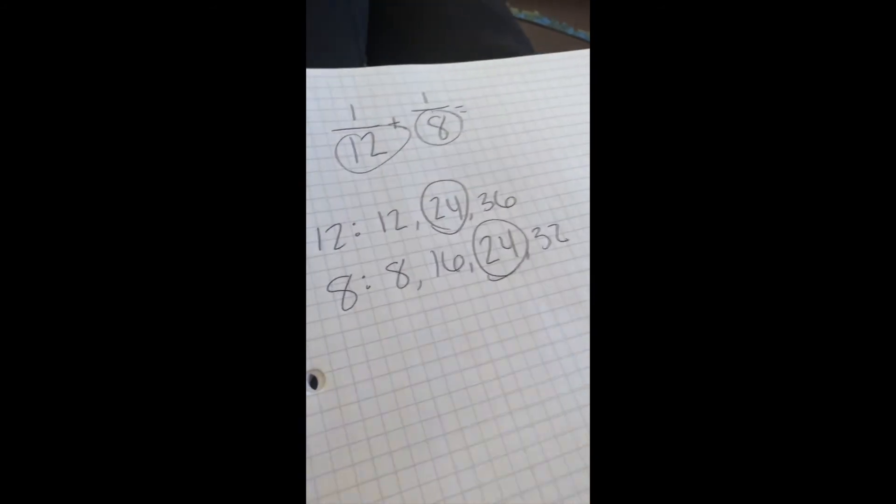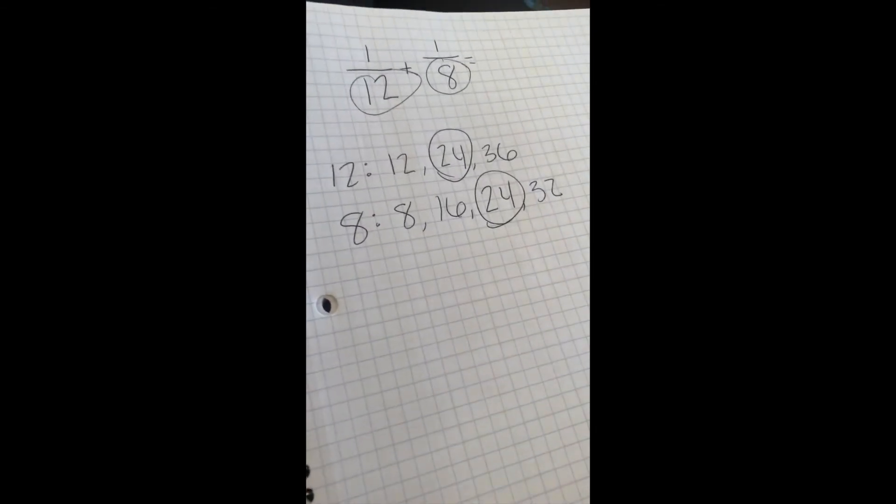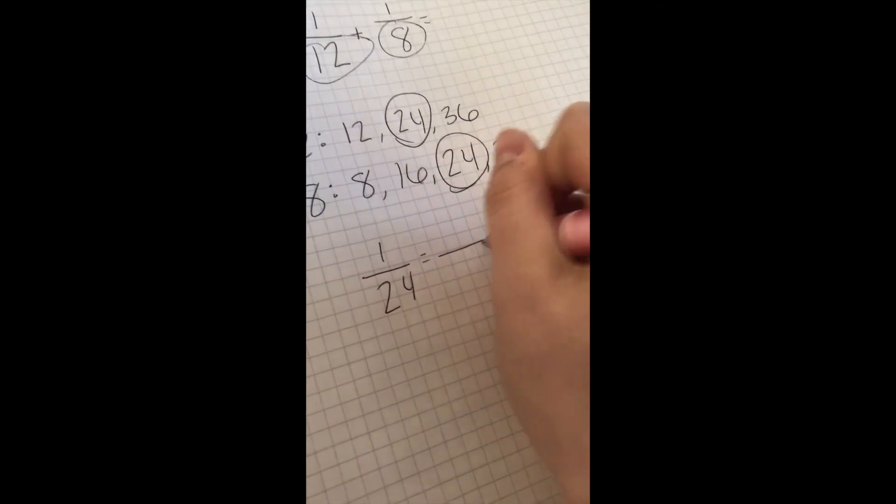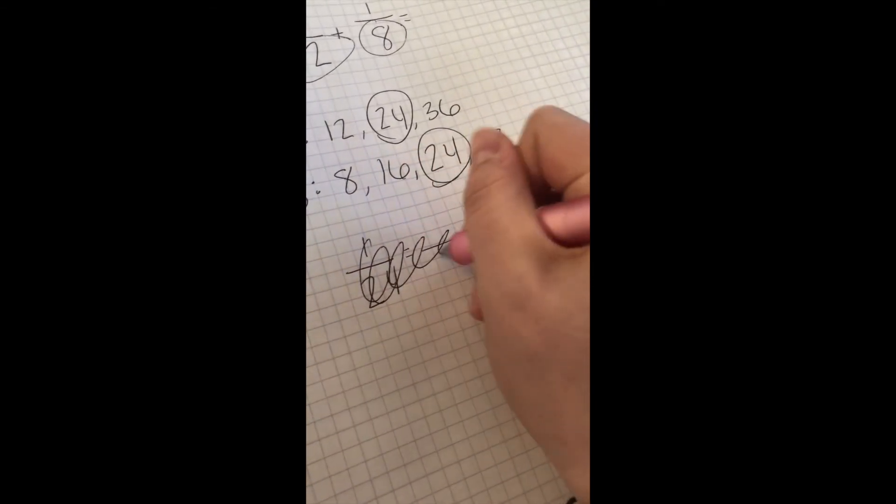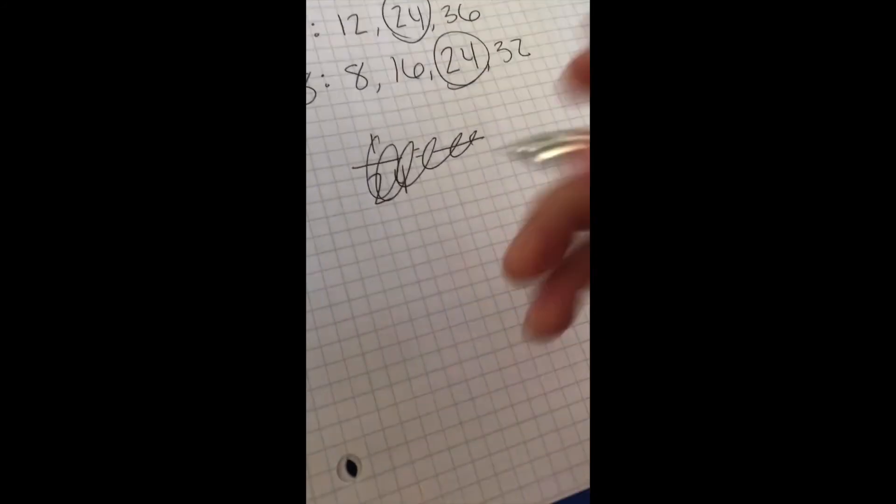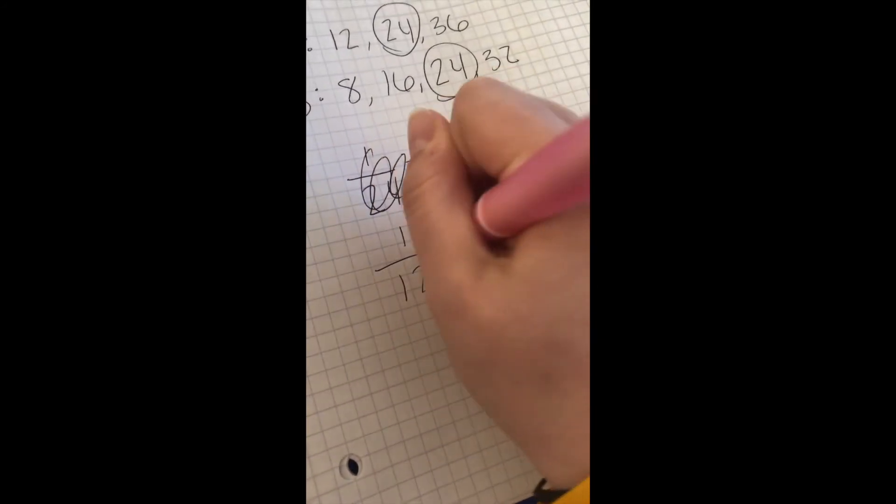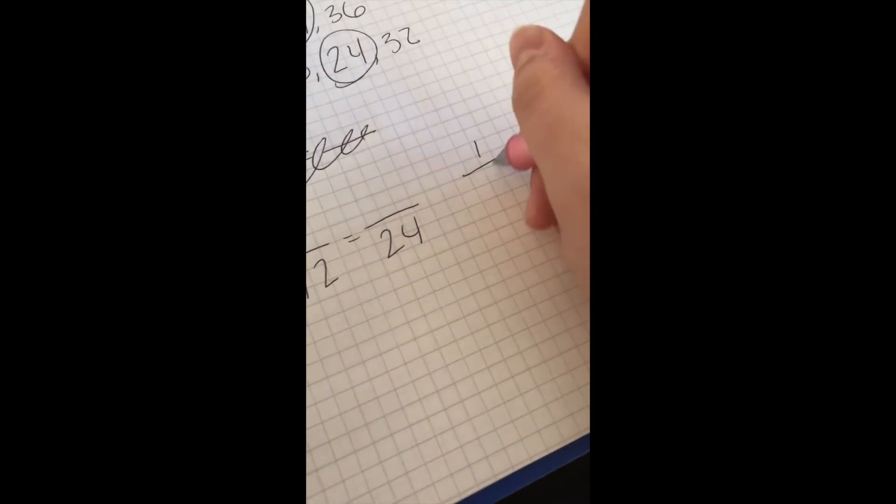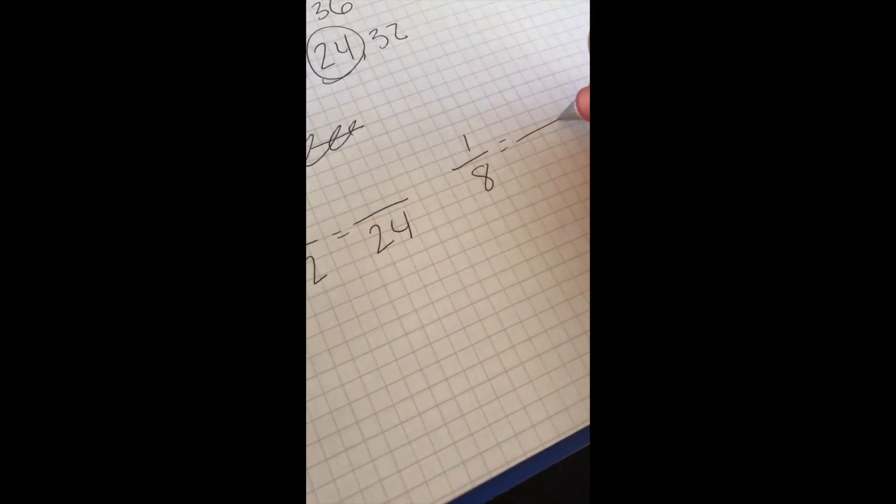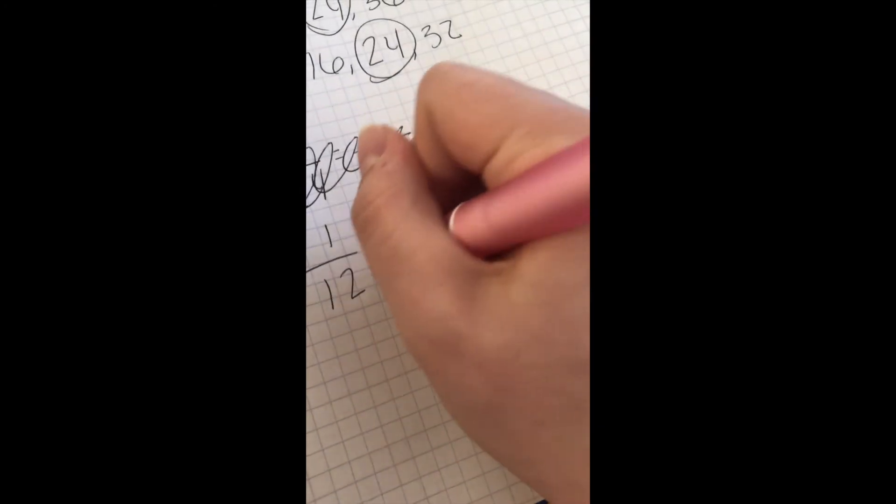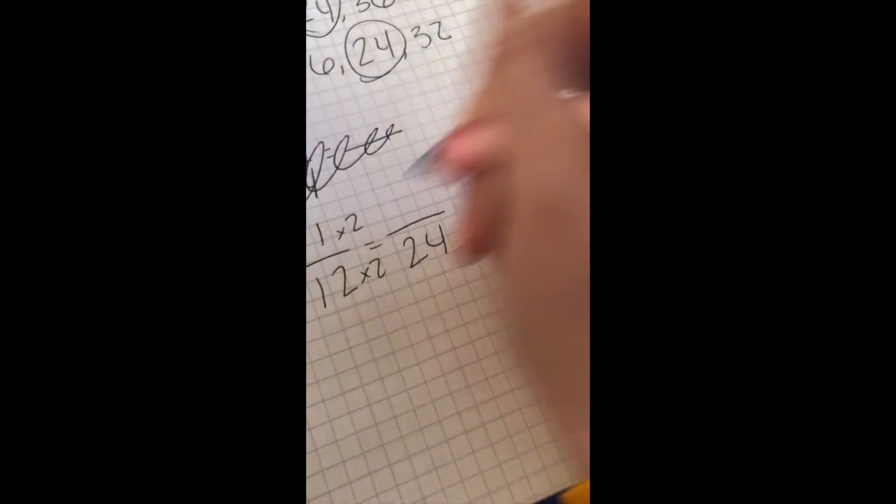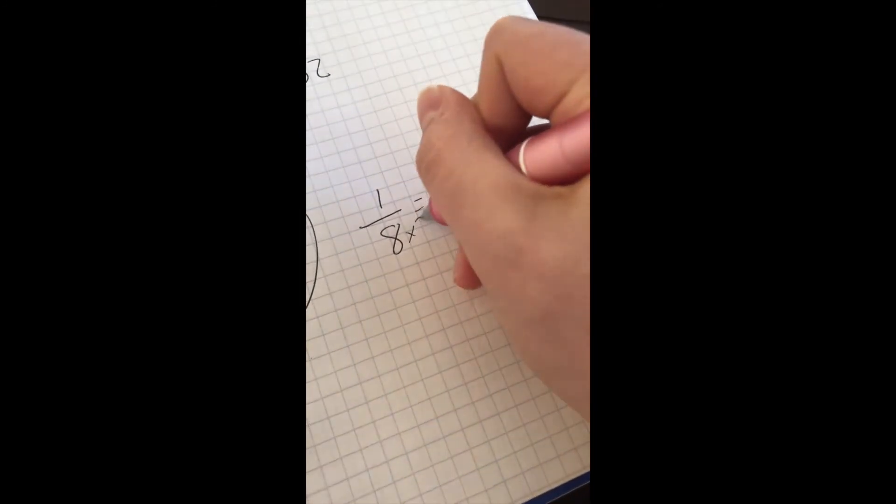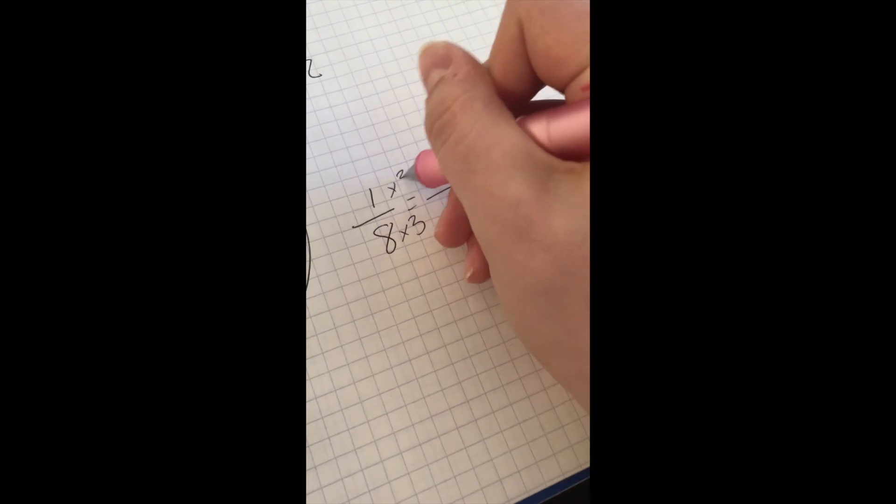So now I have to change both fractions, which you've practiced, but the last two you only have to change 1. I have 1 twelfth equals something over 24. And then I also have 1 eighth, it's going to be equal to something over 24. So from 12 to 24, I'm just multiplying by 2. Same with 1. So I'd have 2 twenty-fourths. And then for 8, I have to multiply by 3. So I have to multiply by 3 in the top.